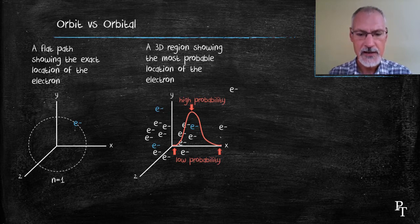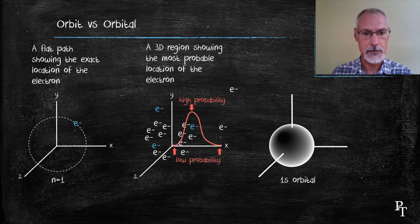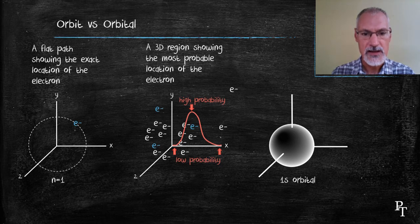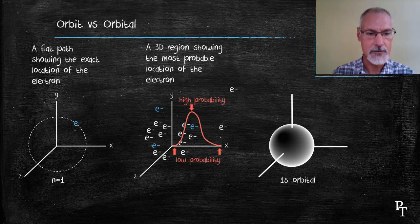I'm representing it here by the spherical-shaped balloon or cloud. This is called the 1s orbital. At the first energy level, there's a 90% probability that you'll find the electron somewhere in that region.